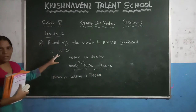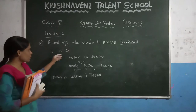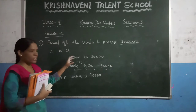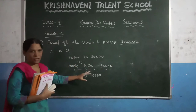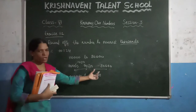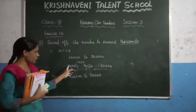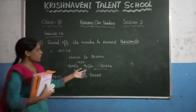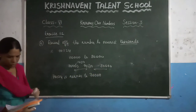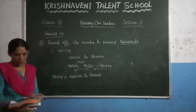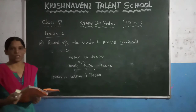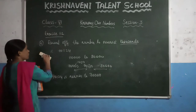So just if you have given thousands, you have to consider the given number lies between which thousands, then consider the middle number, and just check whether this number lies between the first range or the second range. If it lies in the first range, take the first number; if it lies in the second range, take the last number. Two questions are your homework. In the next class we are going to discuss about the expansion of numbers. Thanks.